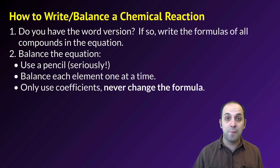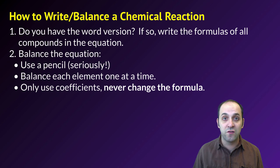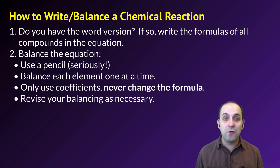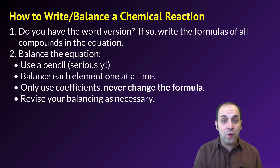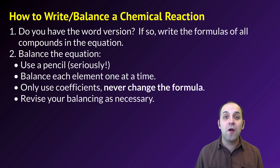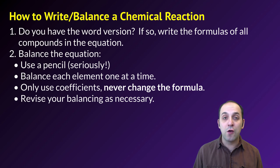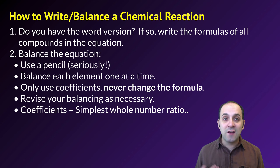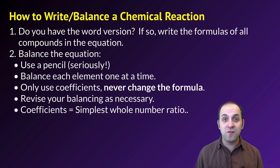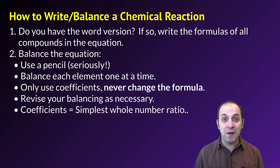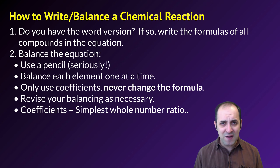That is one of the most common mistakes learners make. As the process continues, you'll likely need to revise numbers by changing coefficients — that's totally normal, which is why you use a pencil. Finally, when you're done, check that your coefficient ratio is the simplest whole number ratio possible. If it isn't, you can simplify it and it will still be balanced. Always aim for the simplest whole number ratio.